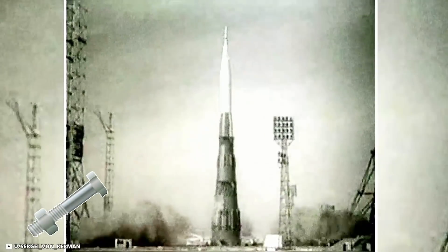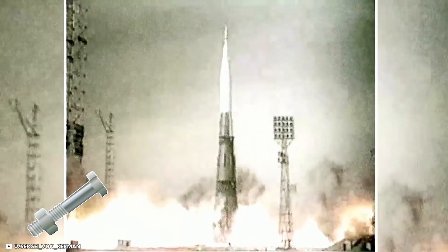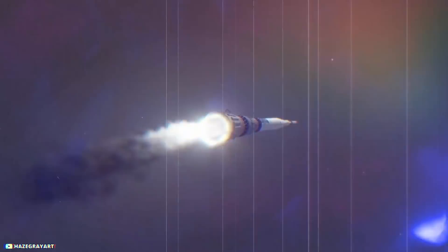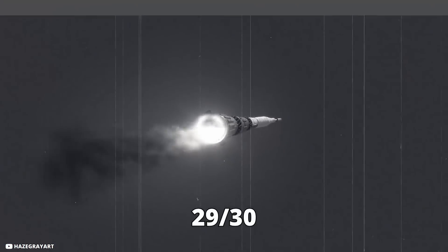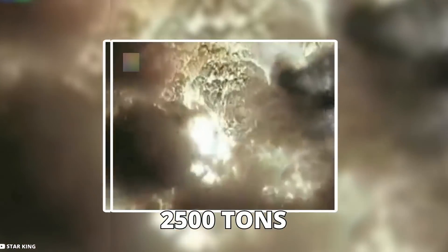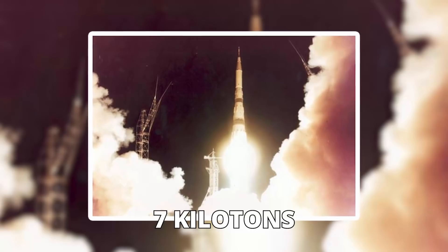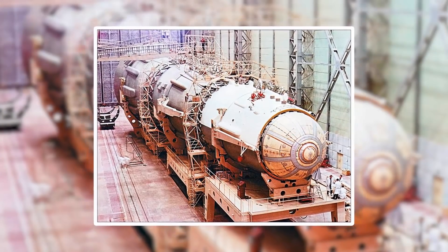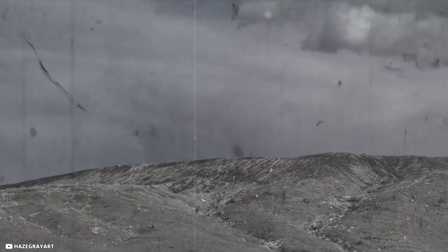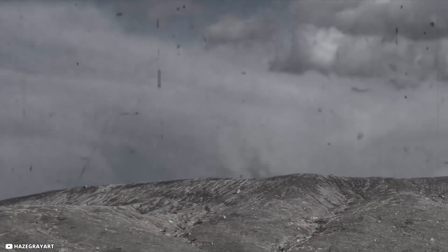A loose bolt broke a fuel pump when N1 took off for the second time in July 1969, causing the automated engine control to shut down 29 of the 30 rocket motors in mid-flight. The explosion of over 2,500 tons of liquid oxygen and kerosene, with a force of 7 kilotons, caused an 18-month delay in the Soviet space program. The four attempts to launch N1 were all unsuccessful. The second failed catastrophically, becoming the world's largest non-nuclear explosion.